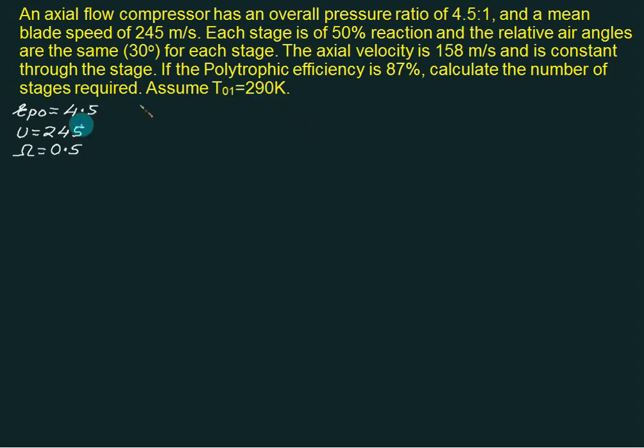So we have overall pressure ratio is 4.5, blade speed is 245 and degree of reaction is 50 percent. We have alpha 1 equal to beta 2 and alpha 2 equal to beta 1. Out of that alpha 1 is given to us as 30 degrees and we do not know the value of beta 1, that is alpha 2. Flow velocity is given as 158 and constant and polytropic efficiency is 87 percent. We want to calculate number of stages and we are given T01 equal to 290.